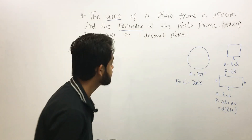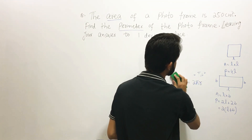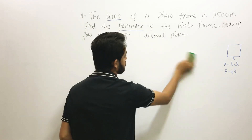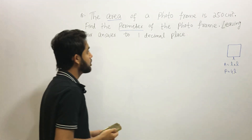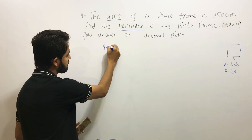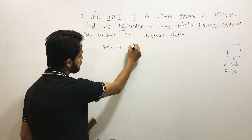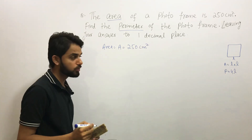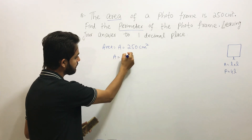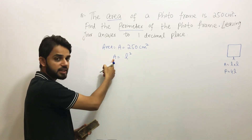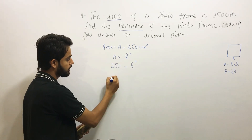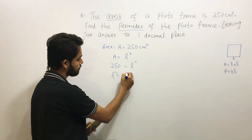Now let us begin with the solution. Since the shape is a square, the area A equals 250 cm squared. We know the area of a square is L squared, so we write: L squared equals 250. It is more appropriate in math to have what you want to find on the left-hand side.